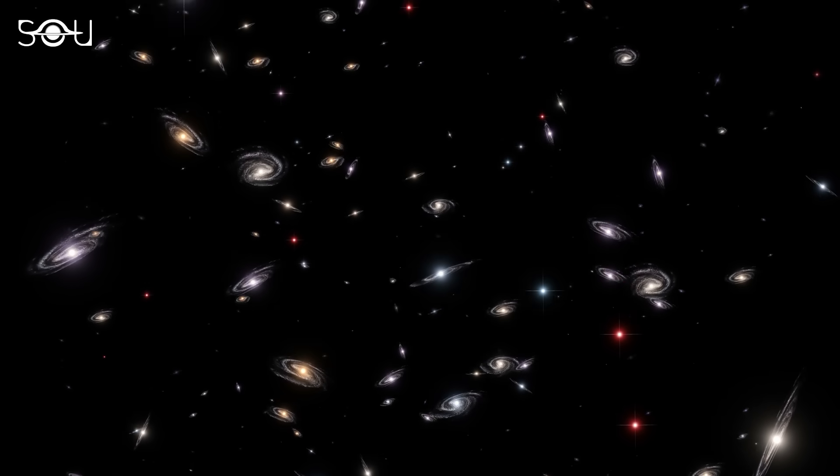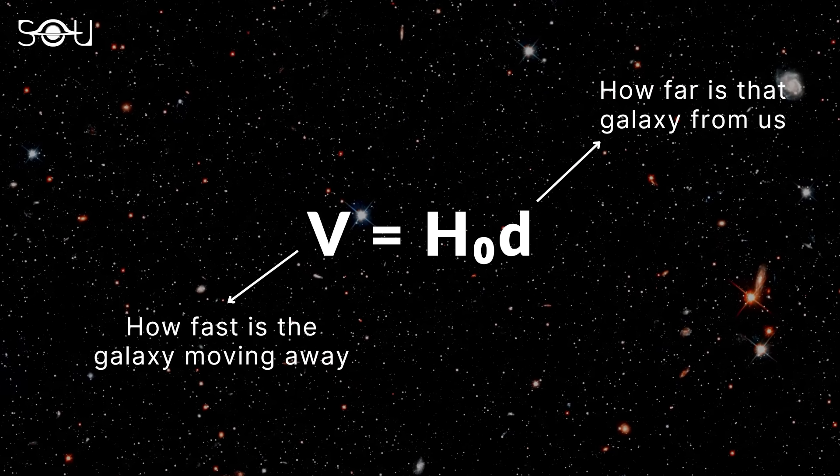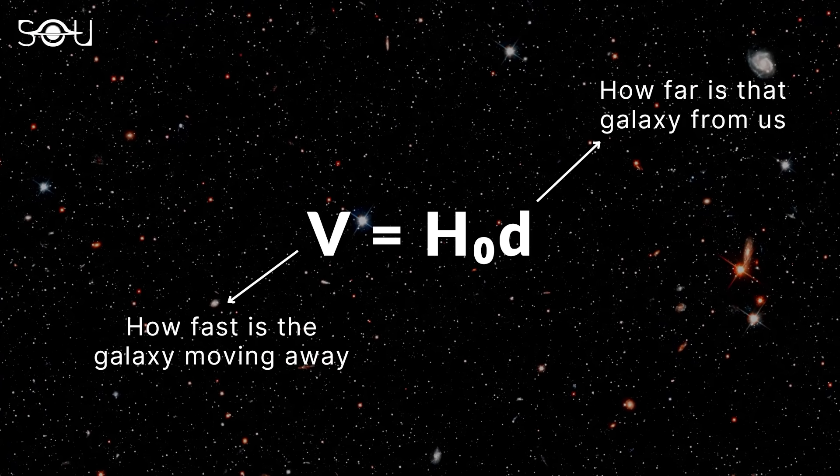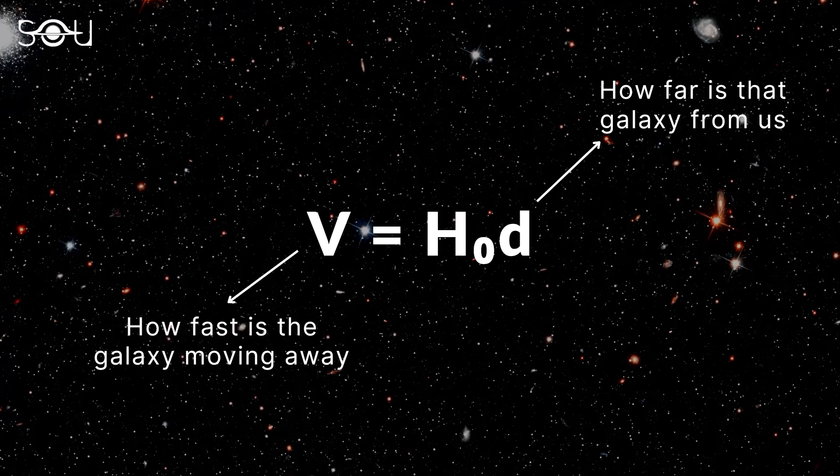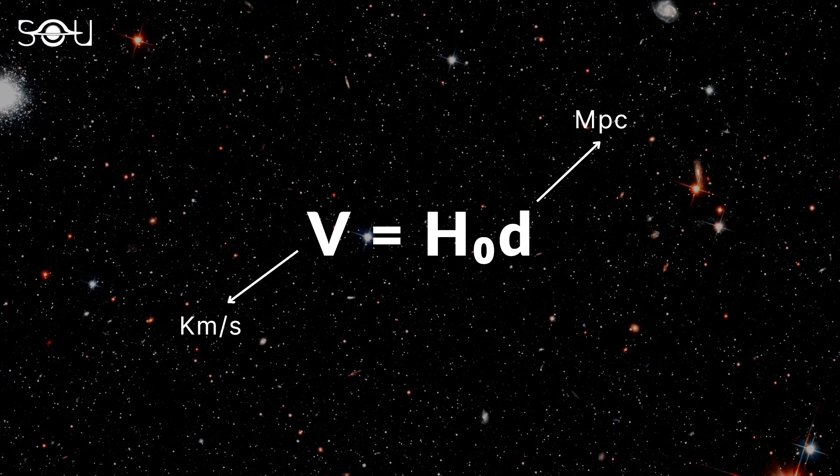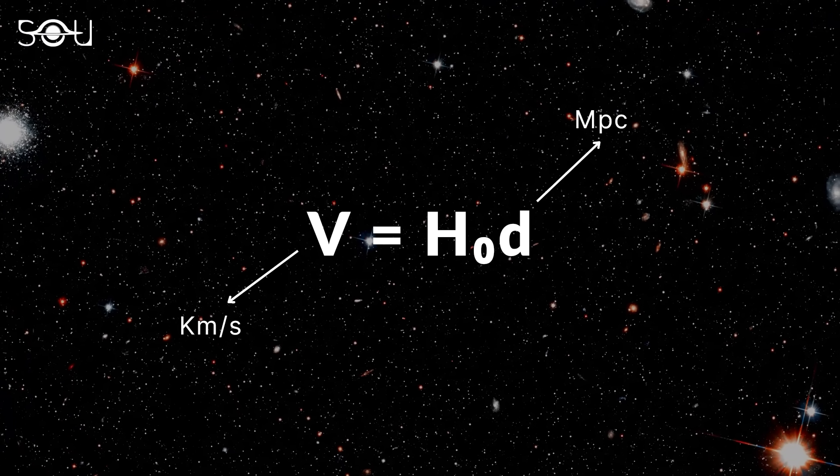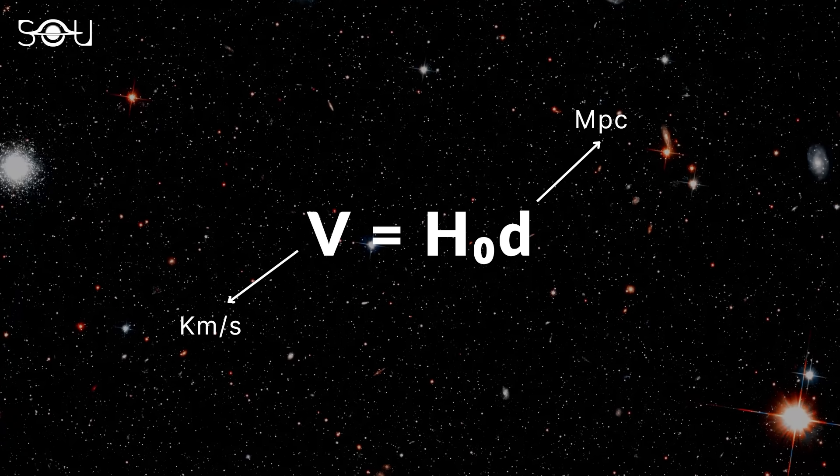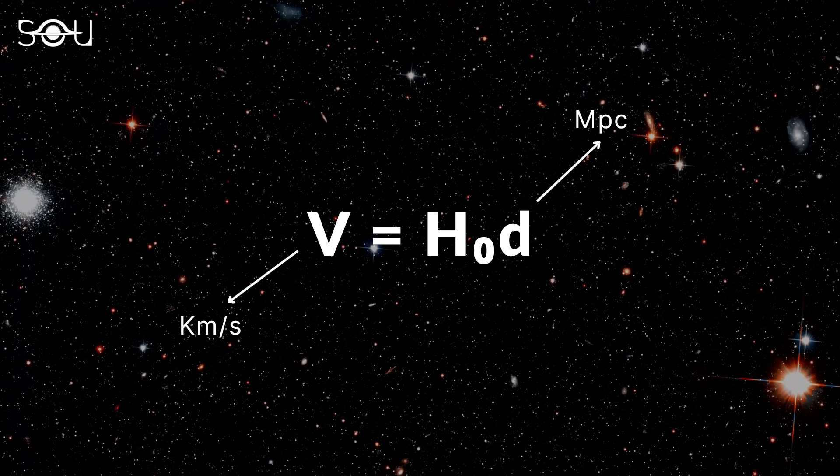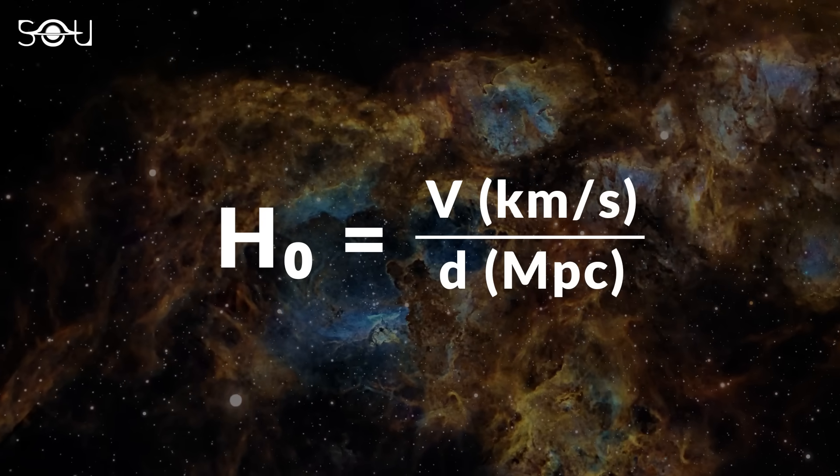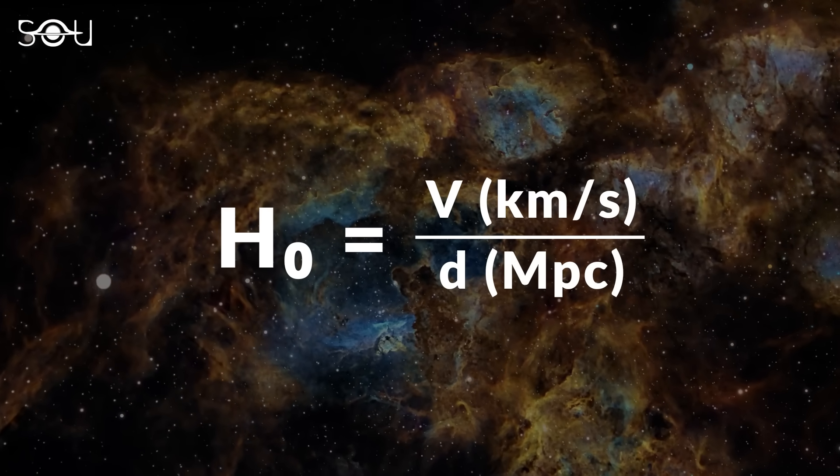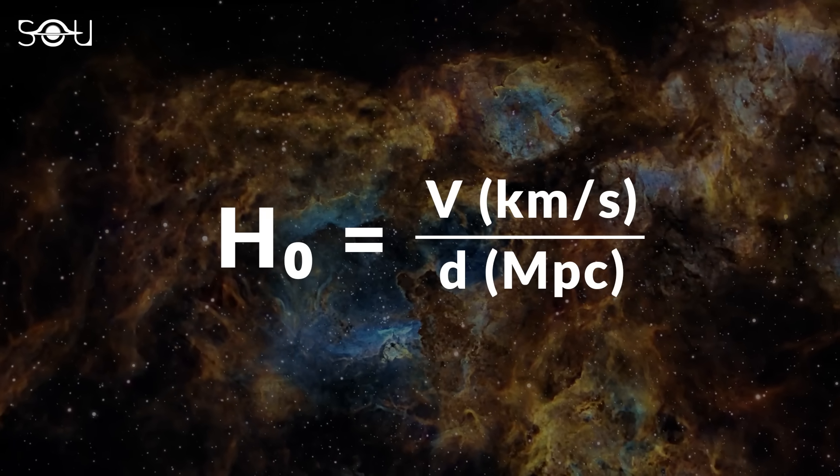The Hubble constant establishes a direct relationship between a galaxy's recessional velocity and the distance to that particular galaxy. So if we measure this recessional velocity in terms of kilometers per second and take the distance between us and the galaxy in megaparsecs, it would clearly state the Hubble constant has units of kilometers per second per megaparsec.